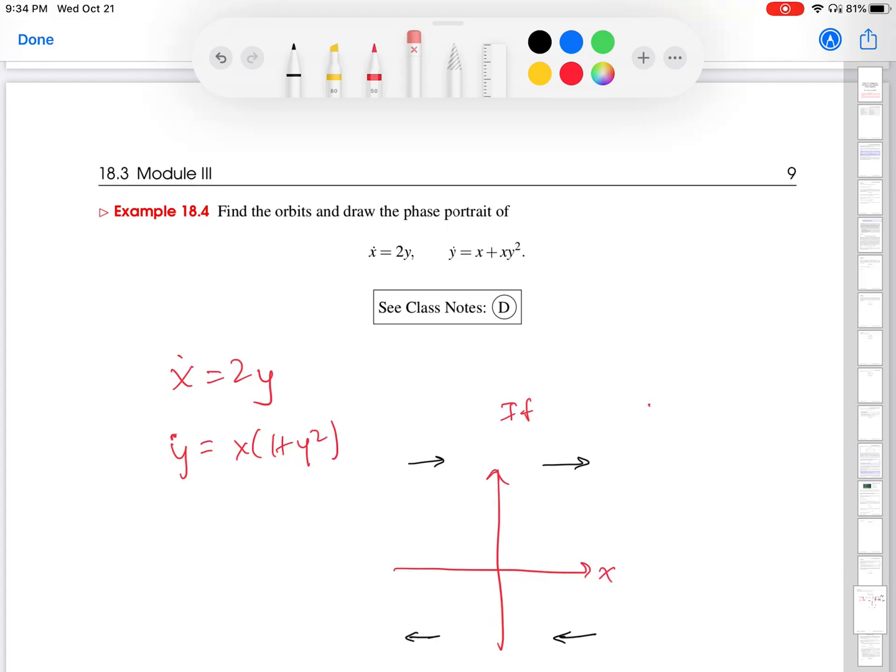Well, so this one's a little harder, but not too bad. So if X is positive, then Y dot is positive. If X is negative, Y dot is negative. Great. So X is positive is over here.